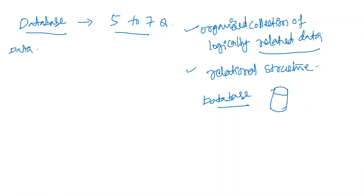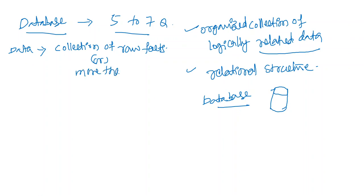Data is a collection of information. The database is called a collection of raw facts. If we have more than one raw fact, we can consider how much data we can get. A collection of raw facts — it is not just a single raw fact. We can give examples of a general raw fact.